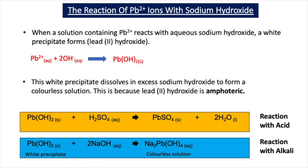When a solution containing Pb²⁺ ions reacts with aqueous sodium hydroxide, we form a white precipitate of lead-2 hydroxide. The ionic equation is: Pb²⁺(aq) + 2OH⁻(aq) → Pb(OH)₂(s). The state symbols are aqueous for both reactants and S for solid for the lead-2 hydroxide, which is the insoluble precipitate.